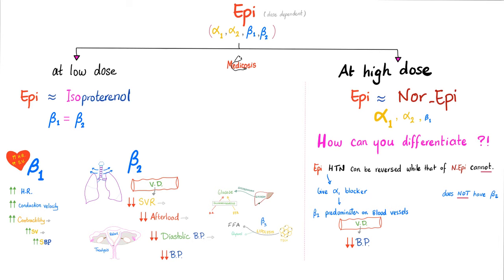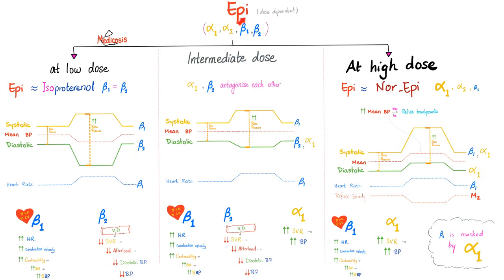At low dose epinephrine is isoproterenol-like: beta 1 increases heart rate and contractility, therefore increasing systolic blood pressure. Beta 2 dilates your vessels, decreasing afterload and decreasing your diastolic blood pressure. But the decrease in the diastolic was greater than the increase in the systolic, and that's why the mean blood pressure will drop slightly. The pulse pressure — the difference between systolic and diastolic — has increased dramatically.